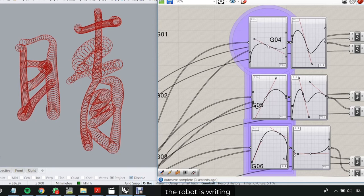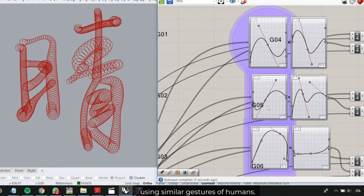Instead of making a photocopy, the robot is writing using similar gestures of humans.